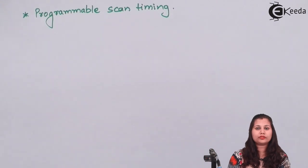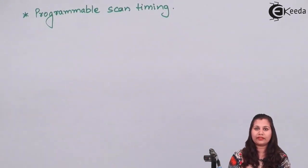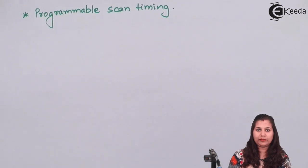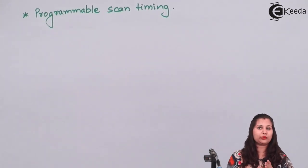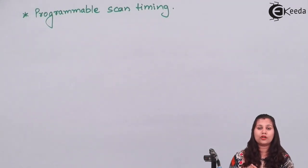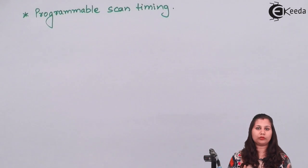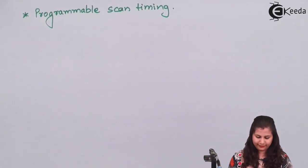Now let us look at how we can interface the 8279 with the CPU. Since it acts as an interfacing device between the CPU and the keyboard and display devices, let us see how both the CPU and the 8279 can be interfaced.